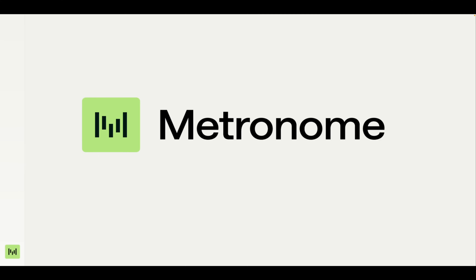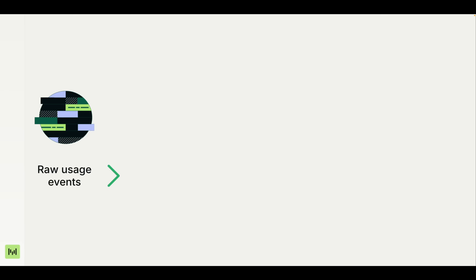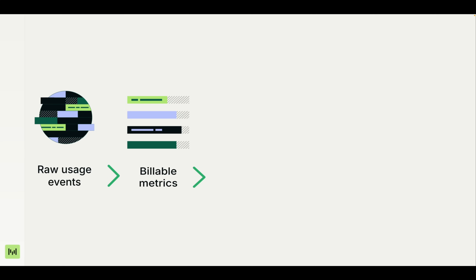Let's dive right in. Let's start with Metronome — it handles the complexity of billing so that you can focus on building your core product. Here's how Metronome works: you send raw usage events — API calls, storage used, whatever your customers actually do.